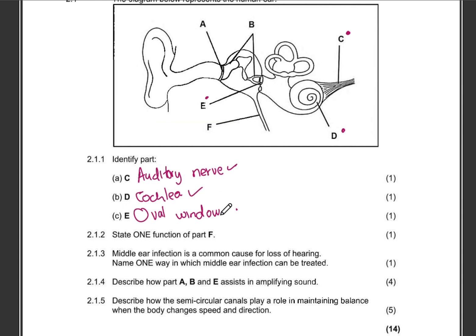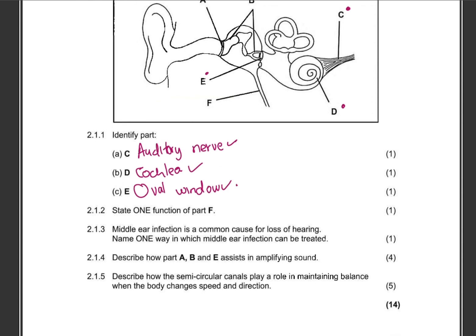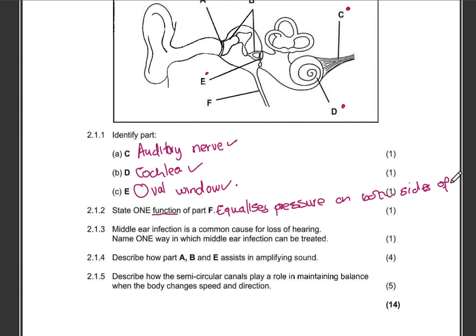Now, state one function of part F. They are not asking us to label or identify part F — they are asking for the function, so there's no need in our answer to even mention what part F is. We know that part F is the Eustachian tube, and its function is to equalize pressure on either side — or both sides — of the eardrum, also called the tympanic membrane. That's one mark.